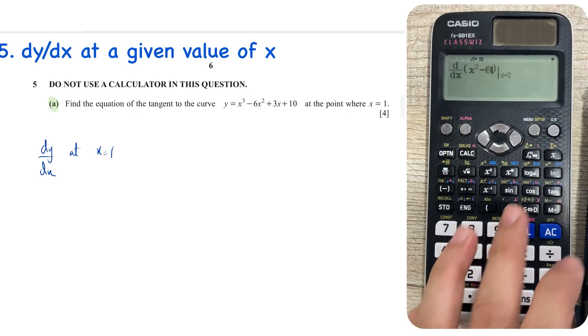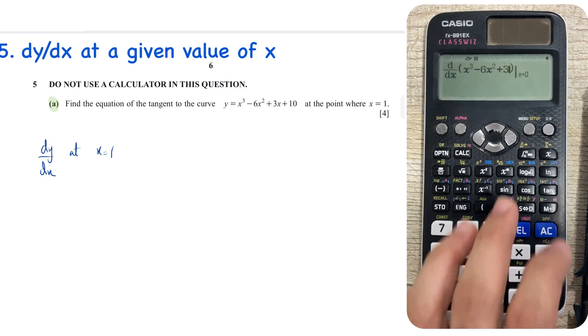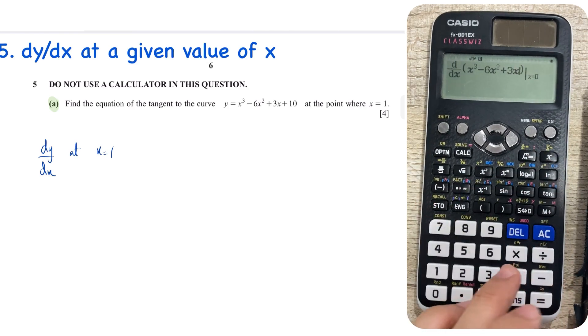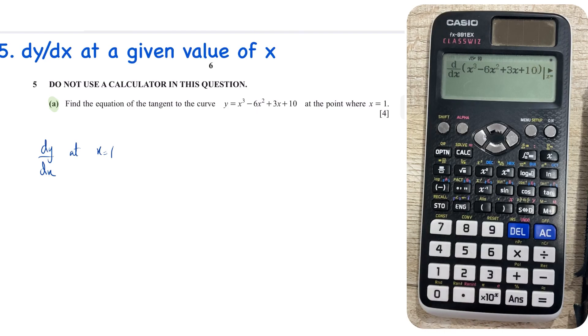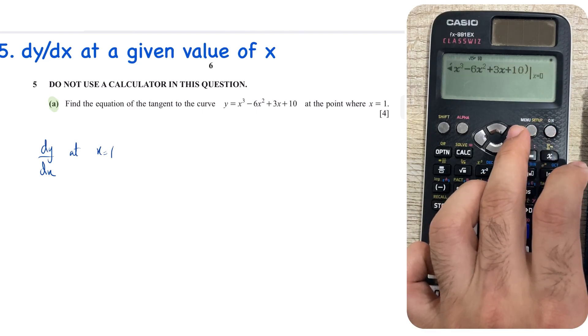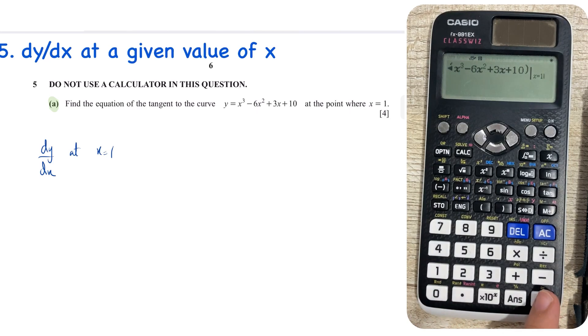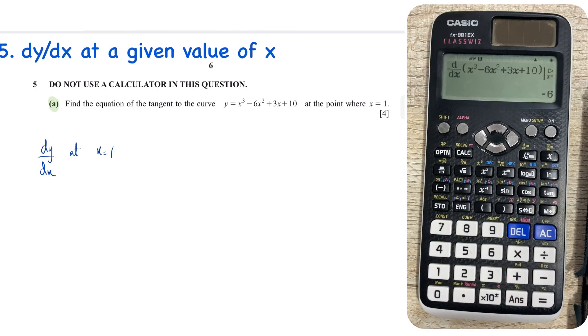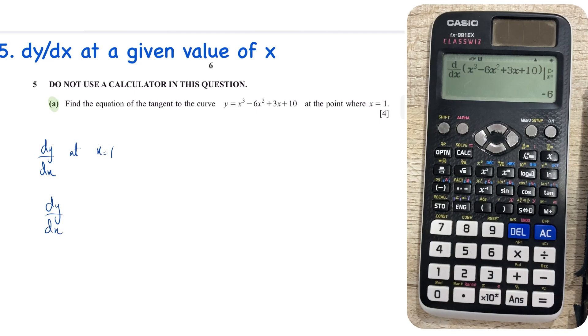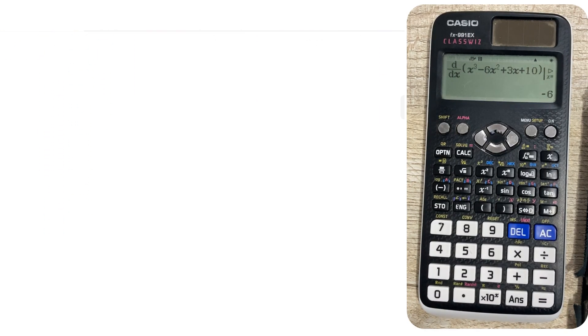okay, minus 6x squared, okay, plus 3x and then finally plus 10. Make sure that you've entered it correctly, x cubed minus 6x squared plus 3x plus 10, and then press the rightwards key and enter the value of x at which you wish to find the gradient. So that's 1 in this case, so you press 1 and you can see that the gradient is equal to what? It's equal to minus 6. So that was number 5.